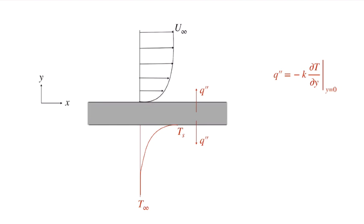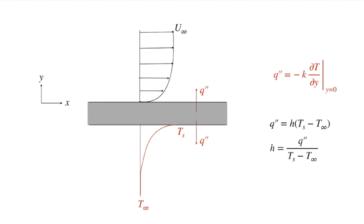The heat flux at any given location is given by Fourier's law: minus k times the temperature gradient at the wall. By examining this temperature gradient we can determine the local heat flux. We can also describe that same heat flux using Newton's law of cooling — a convection coefficient times the temperature difference between the surface and T infinity — allowing us to solve for the convection coefficient.